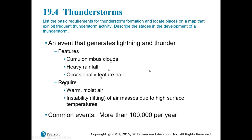Thunderstorms require warm, moist air — this is the source of energy. Once the thunderstorm is cut off from its warm, moist air, it does not have energy to keep going. We also need lifting because warm, moist air by itself will not generate a thunderstorm. We need instability in the atmosphere, a reason that air is going to be moving upwards and condensing. This is why cold fronts are often associated with thunderstorms — we have lifting, often very vertical lifting. Quickly lifting warm, wet air is really the instability it needs.